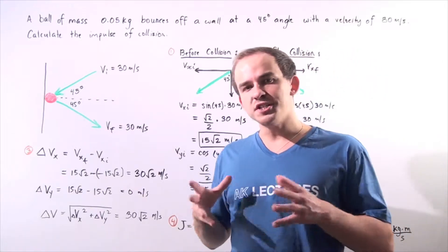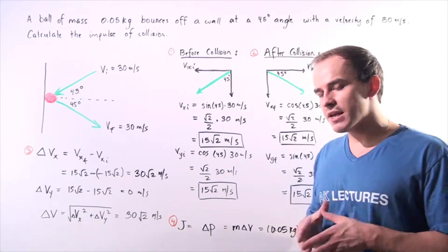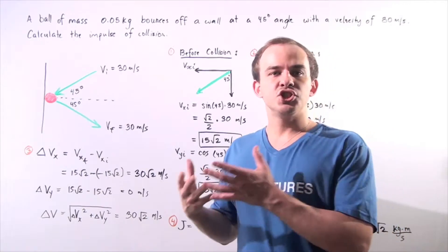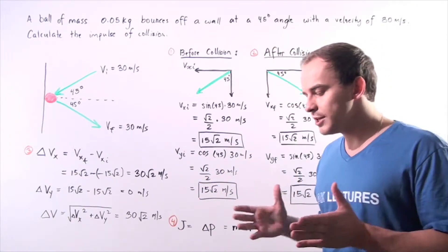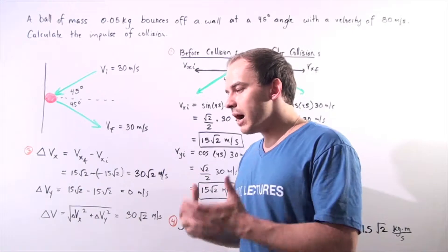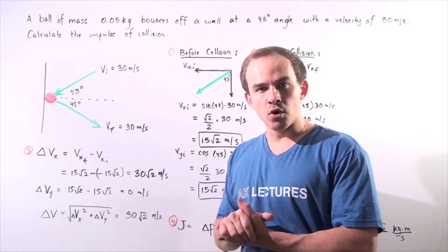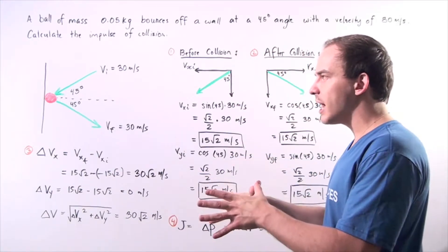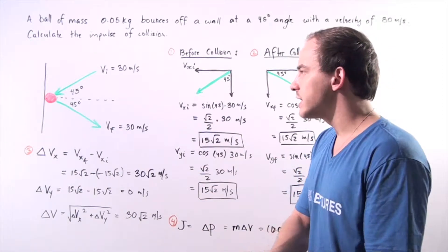In an earlier lecture, we spoke about impulse and we said that impulse is the change in momentum of an object when a collision takes place. So an object experiences an impulse when a collision takes place between that object and another object.